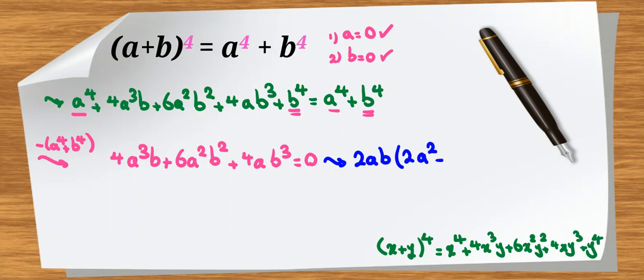And first part, 2a squared will be left. Then second one, 3ab. Next one, 2b squared. Sum of them equal to 0.